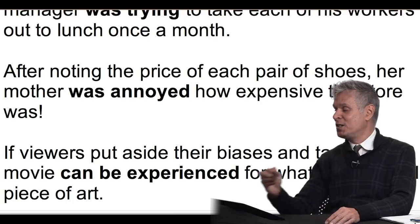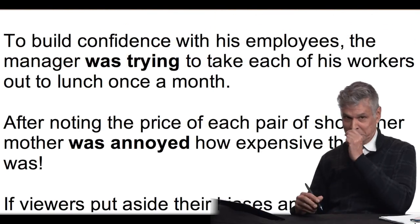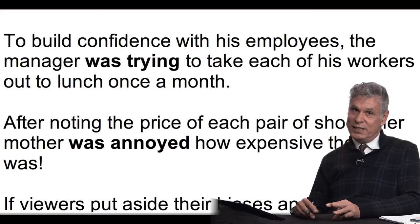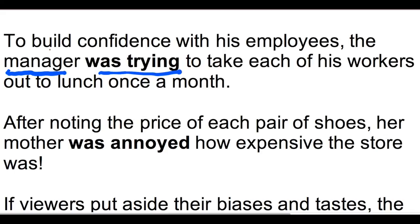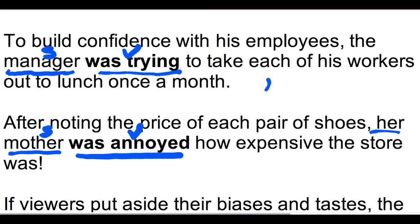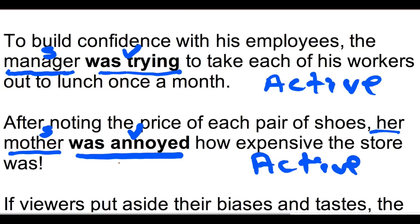Let's see how you did on this little mock quiz. Two out of the three are active. The first one — hopefully you thought this was active. The person doing the trying comes before the verb. I'll put an S over 'manager,' a V over 'was trying.' Because manager comes before the verb: active. In the second sentence, 'her mother' is the subject — she was the one who was annoyed. I'll put a V over 'was annoyed.' That's also active. That one was tricky because 'was annoyed' has that same sound as a passive voice. But you can't go by 'oh, it has was...ed.' You can't do that. You have to think word order. That's the way you're going to do this.